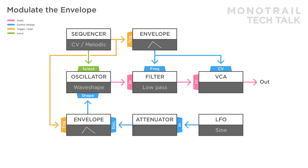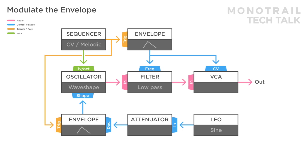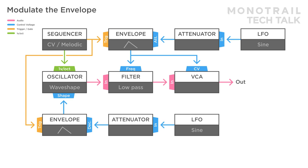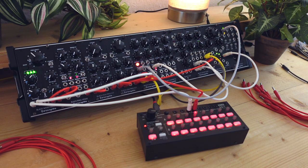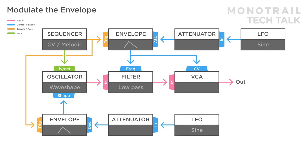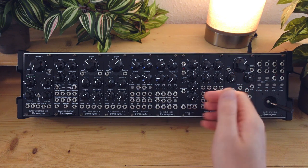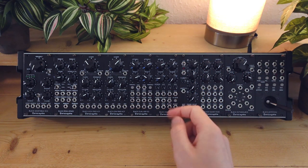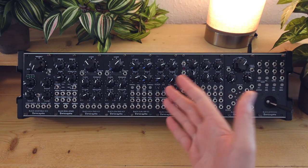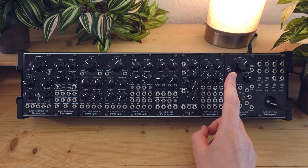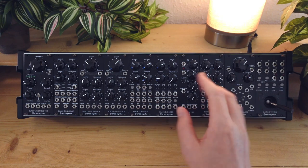Here's the exact same patch with a slower and randomized sequence and slower envelope settings. A second LFO is added, this time modulating the attack parameter of the first envelope. Because the two modulation LFOs are not synced, the modulation will create lovely shifts in the sound. In upcoming patches I will no longer show the attenuators in the graphics just to avoid clutter. They're not always necessary — some envelopes have attenuators built in, and sometimes you can adjust the strength of modulation at the source. But remember, you always have to dial in the right amount of modulation one way or another.